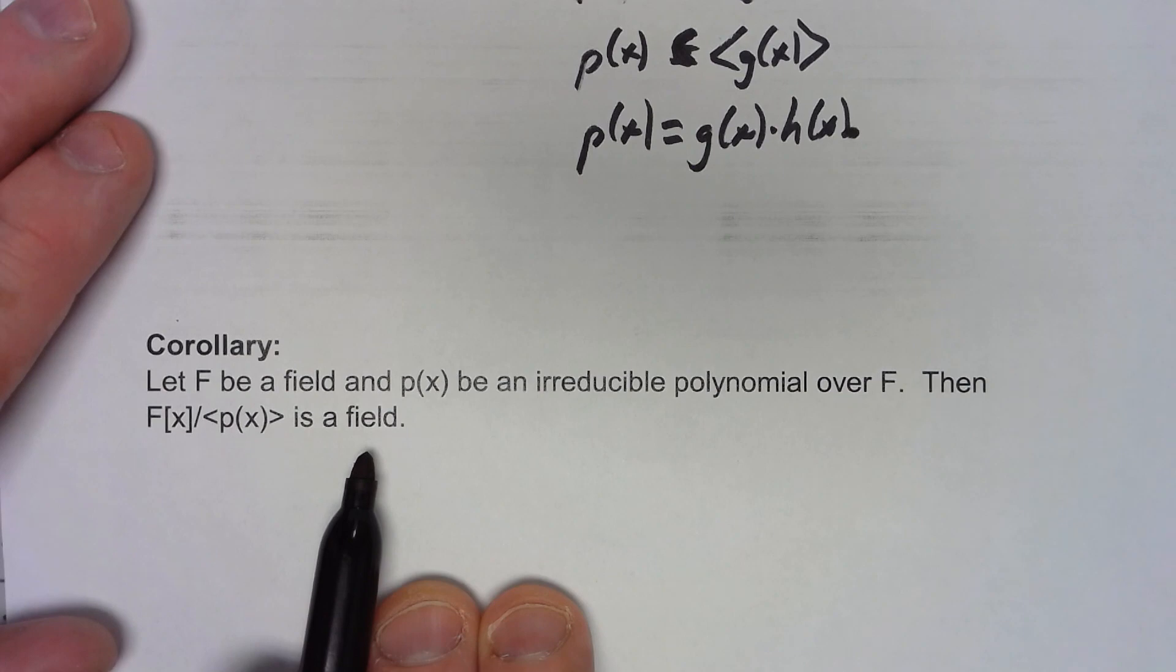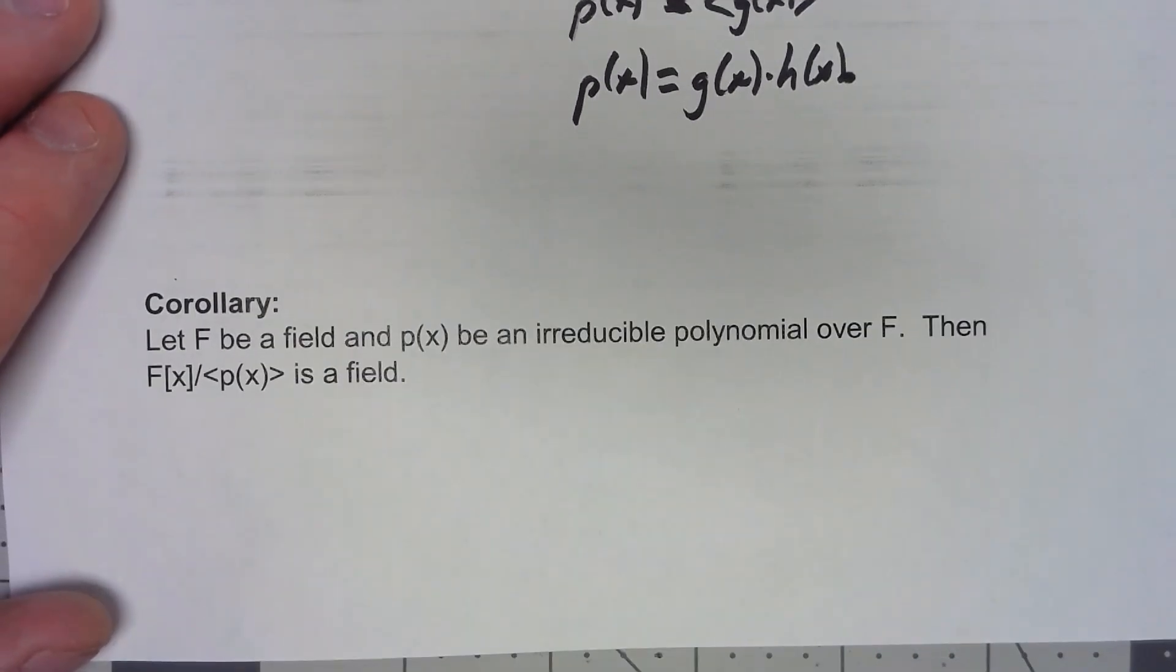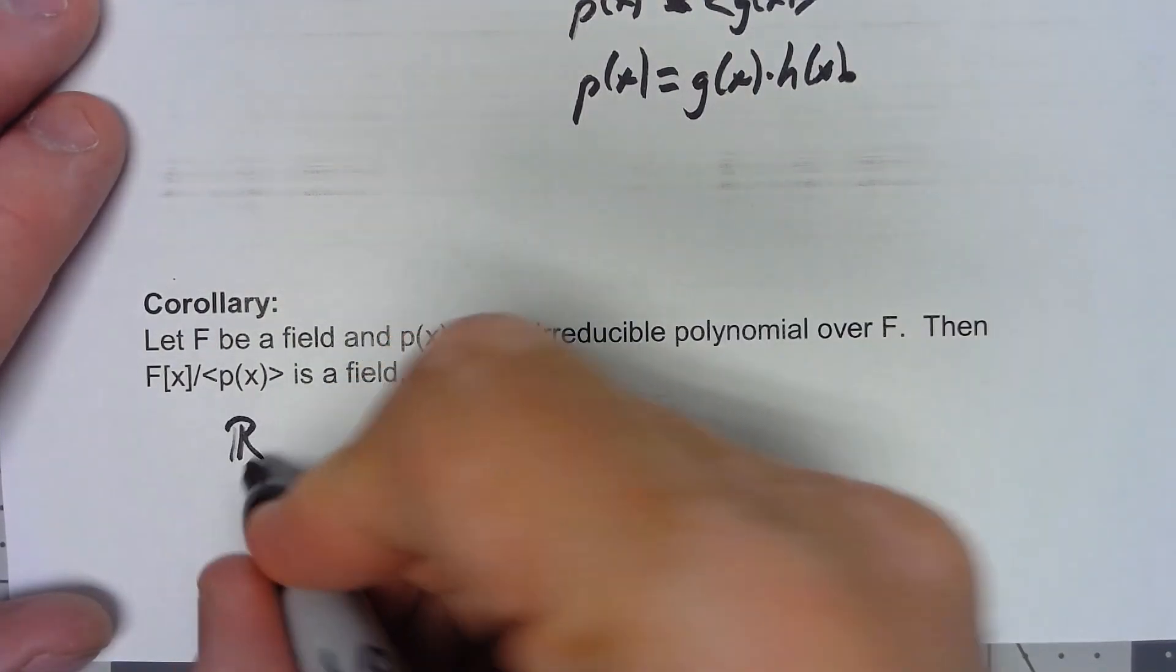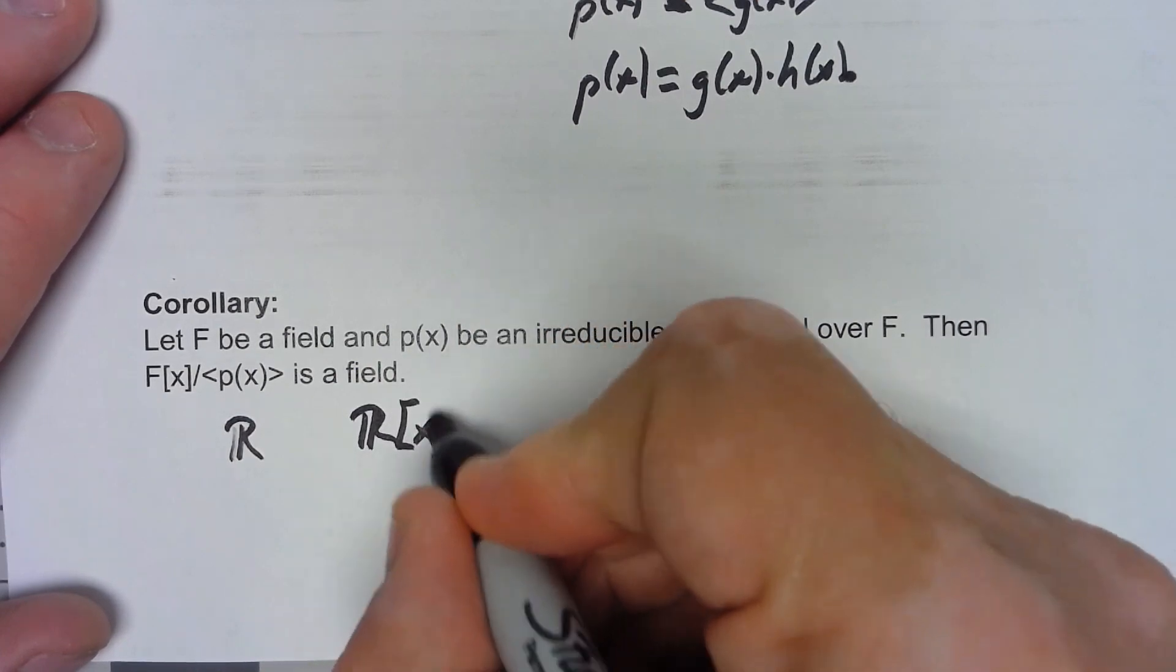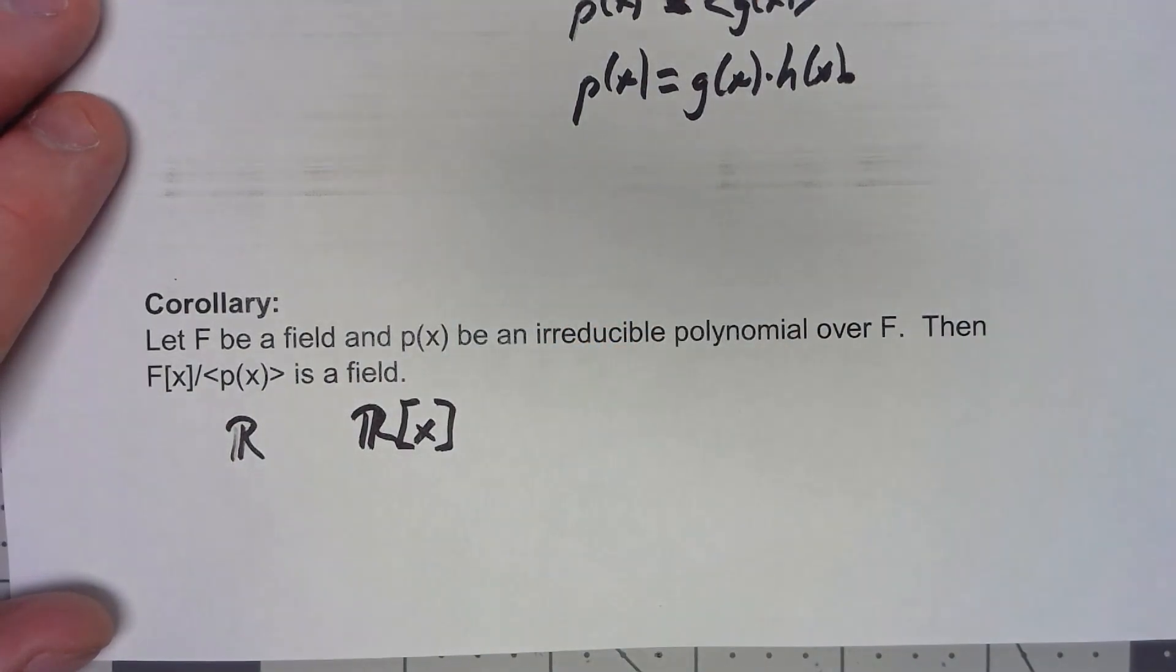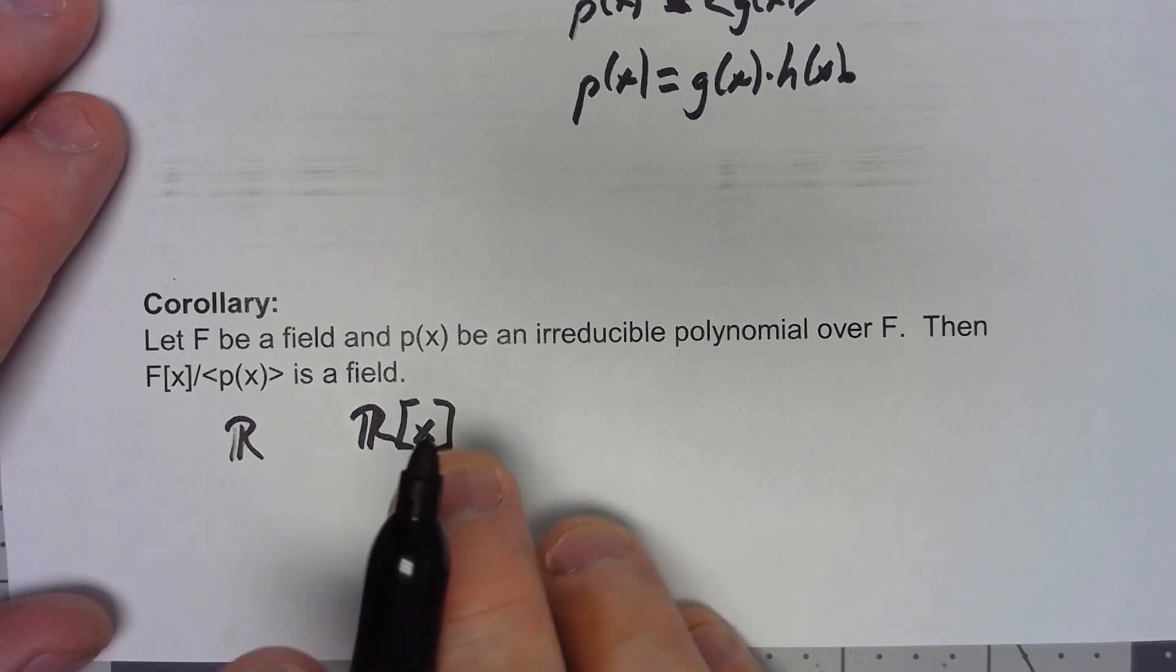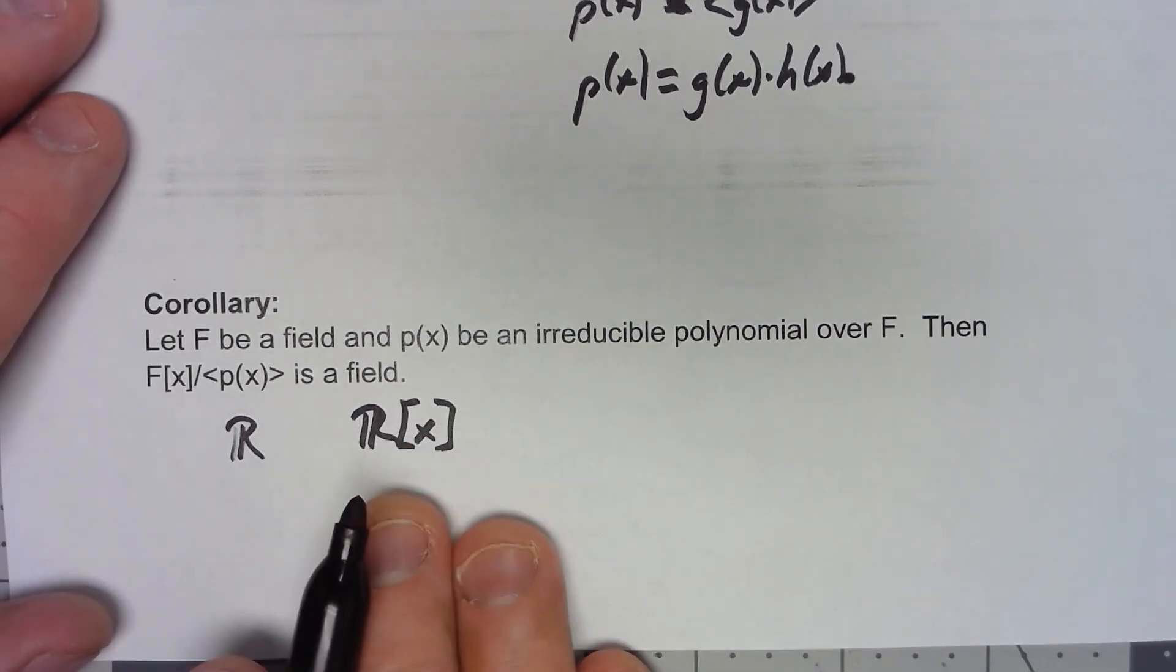This is interesting because it means that, for example, if I create my field being the real numbers, I create my polynomial ring R[x], there aren't multiplicative inverses in this. This thing is not a field. This thing is not a field. It's a ring. It's an integral domain, but it does not have multiplicative inverses.